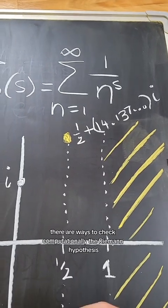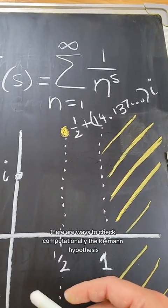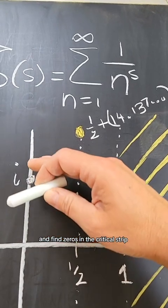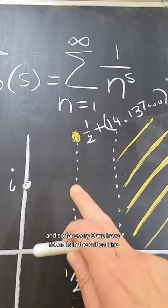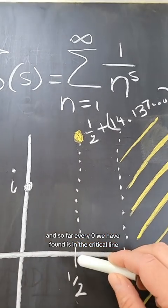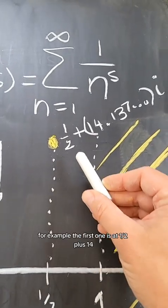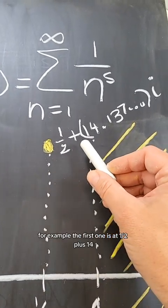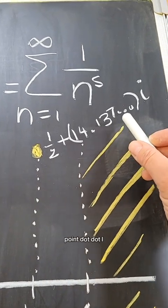There are ways to check computationally the Riemann hypothesis and find zeros in the critical strip. And so far, every zero we have found is in the critical line. For example, the first one is at one half plus 14 point dot dot dot i.